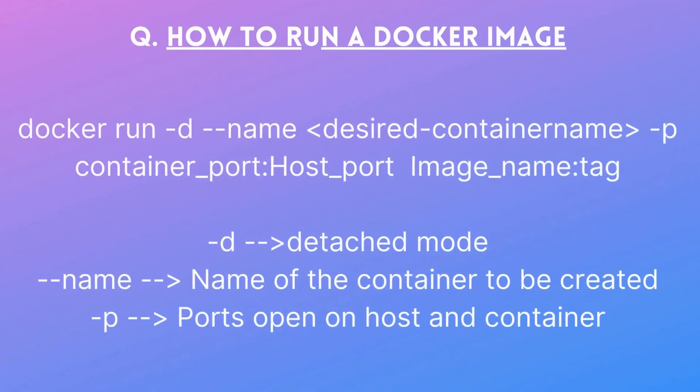Another question is how to run a Docker image. You could first run `docker pull` to download the image and then run it, but it is better to just use `docker run`, which downloads and runs the image in one step. The full command is: `docker run -d --name <container_name> -p <host_port>:<container_port> <image_name>:<tag>`. The `-d` flag means detached mode so the container runs in the background. If you don't provide a tag, it takes the latest version.